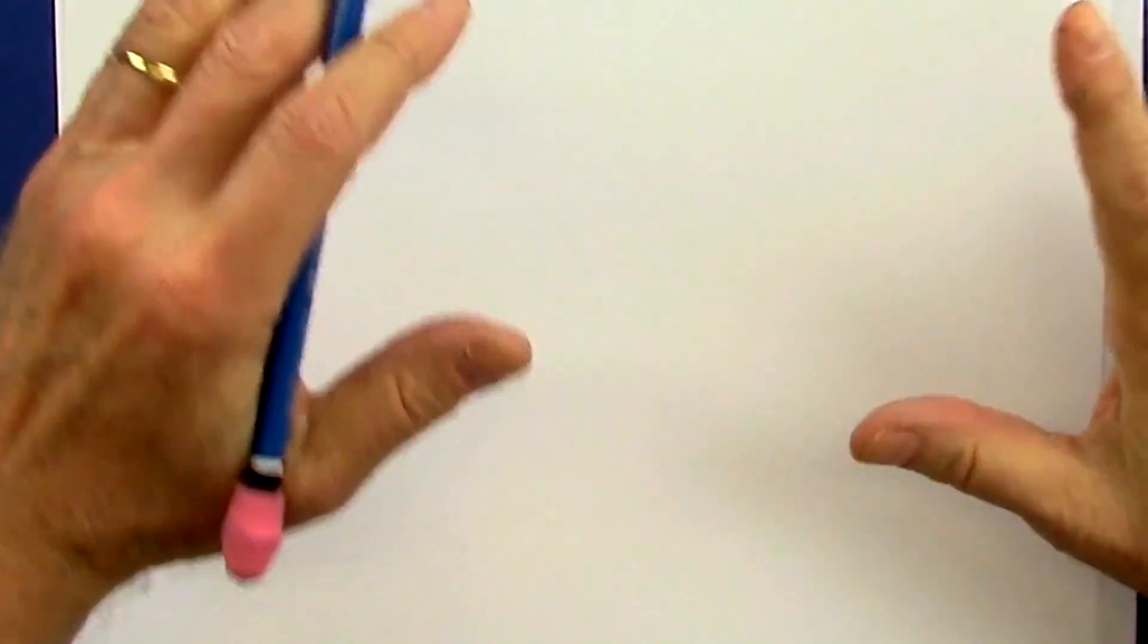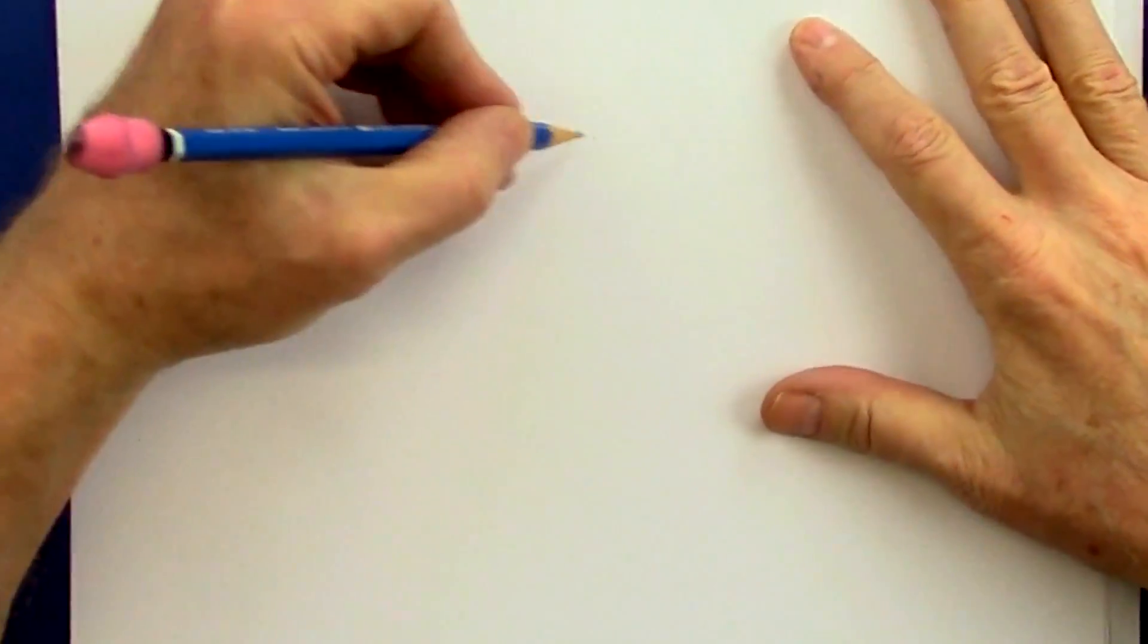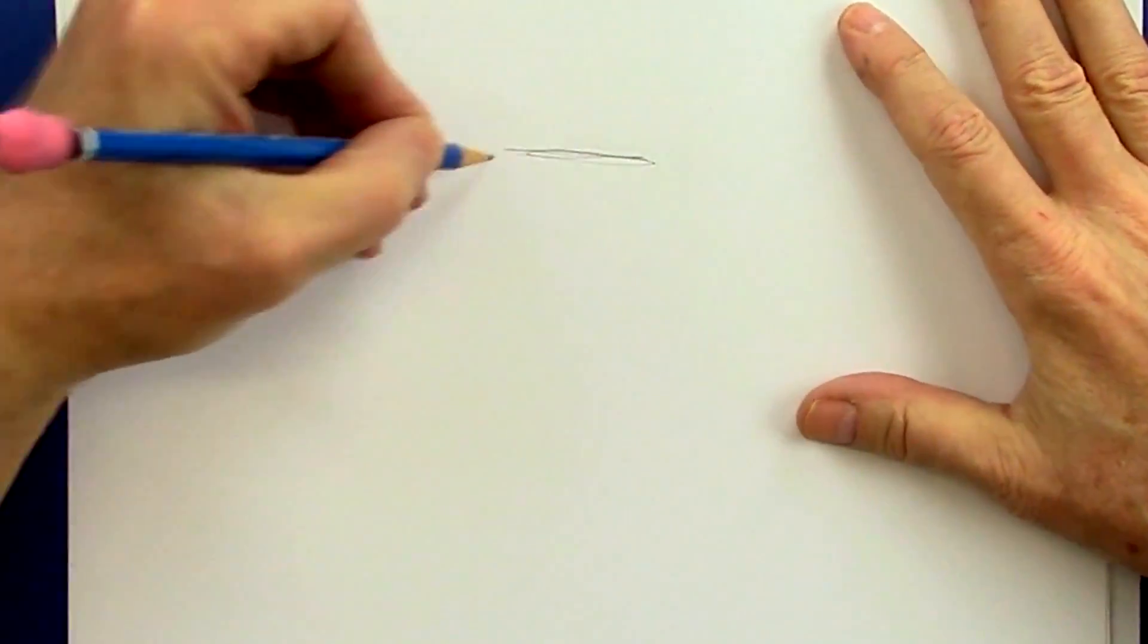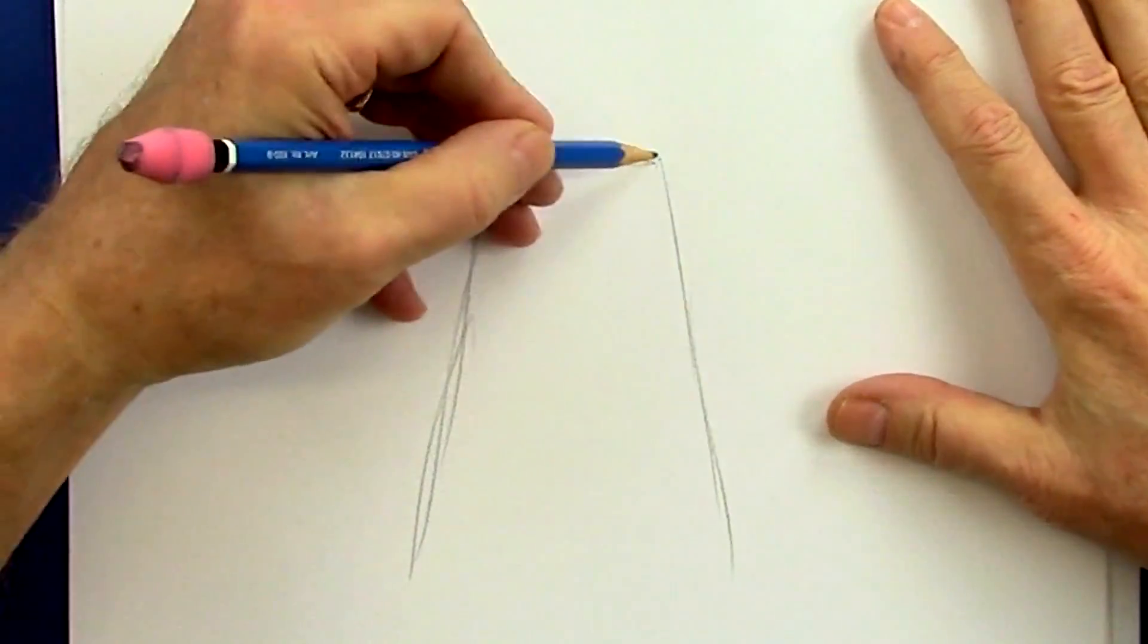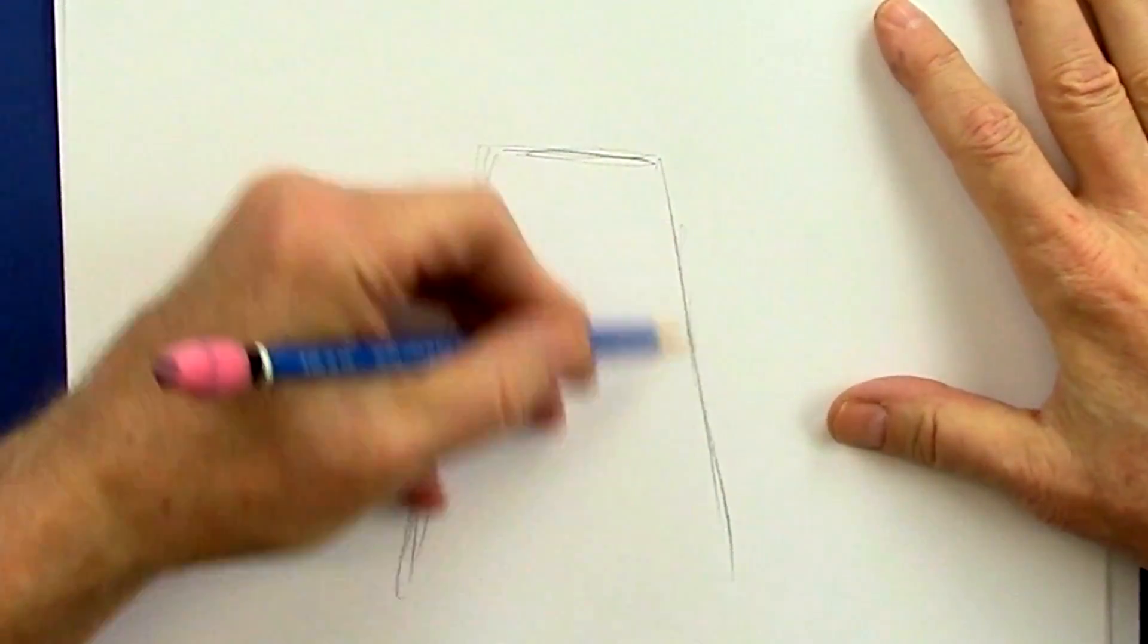Today I'd like to show you how to draw a super simple bear character. We're going to start off like this. Here's the top of the head. It's going to come down like this. It almost looks like a volcano, but it's going to be a bear.